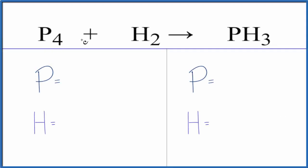To balance this equation we have P4 plus H2 combining to form PH3. So let's count the atoms up and balance the equation.